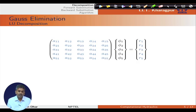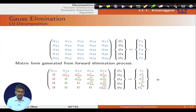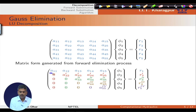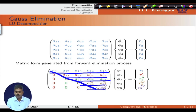In LU decomposition we can utilize the Gauss elimination concept. The basis is that the matrix generated from the forward elimination process has the first row unchanged, while the second, third, fourth, and fifth rows are changed values of the coefficient matrix. We have generated an upper triangular matrix out of this Gauss or forward elimination process.